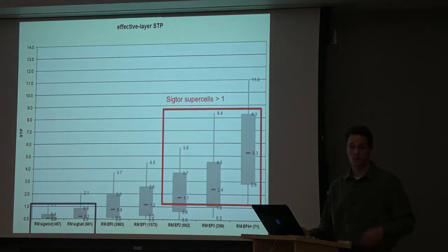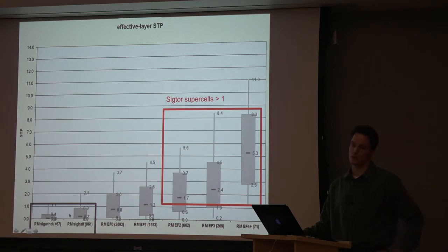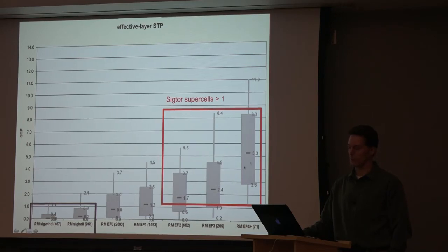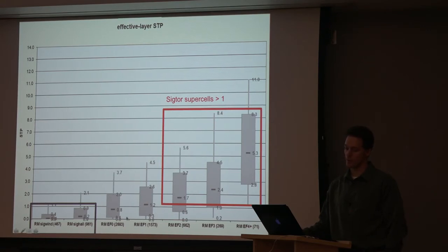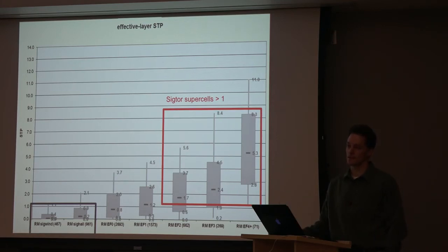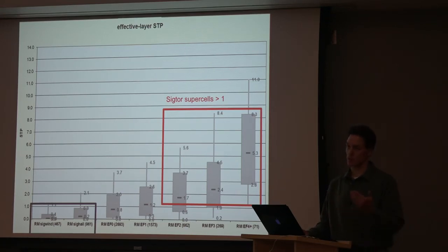When we plot the STP for proximity soundings, right-moving supercells producing only wind and hail show significant tornado parameter values clustered at or below one. Looking at all tornadic storms by EF scale — especially EF2s, EF3s, and violent tornadoes — there's a dramatic increase. Significant tornadoes are generally associated with values greater than one. There is a lot of overlap, however, and sample sizes are much larger for lower-end tornadic storms. That 10% not plotted might equal the entire violent tornado sample size. The probabilities always favor weaker or non-tornadic storms, but we need to identify the serious tornadoes because they do by far the most damage.